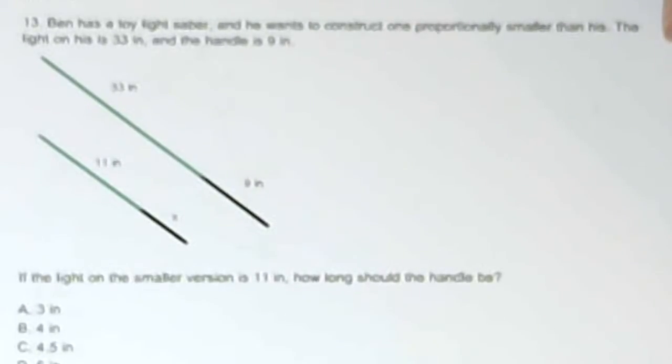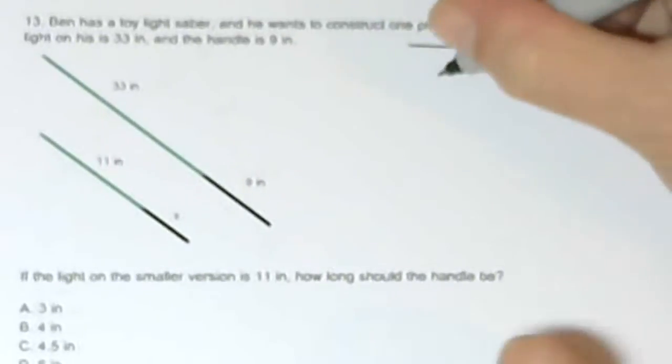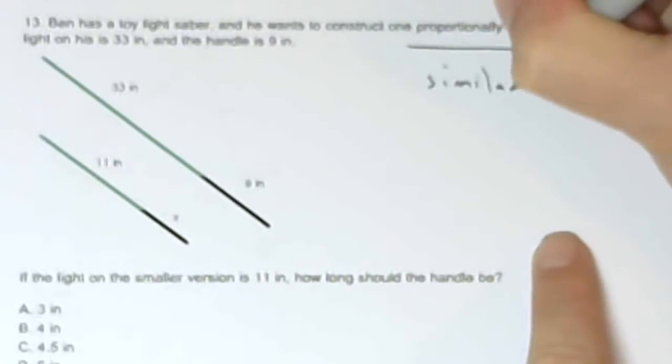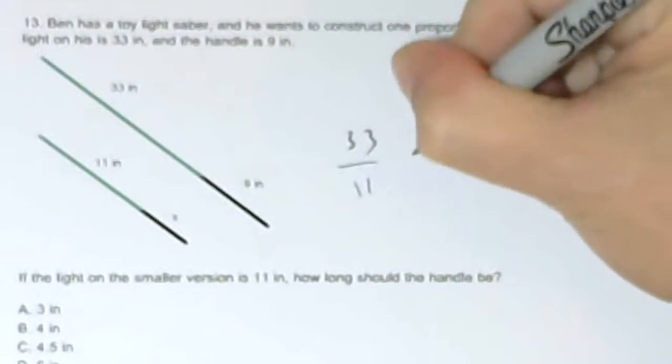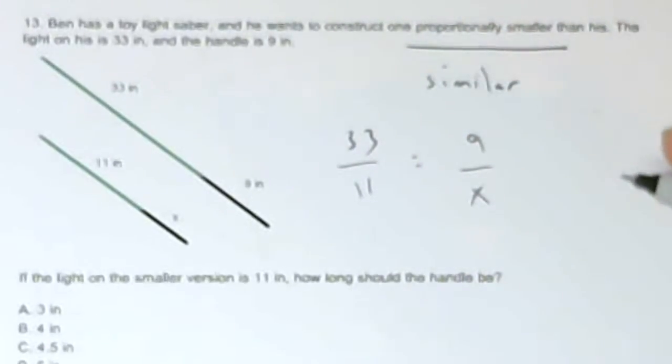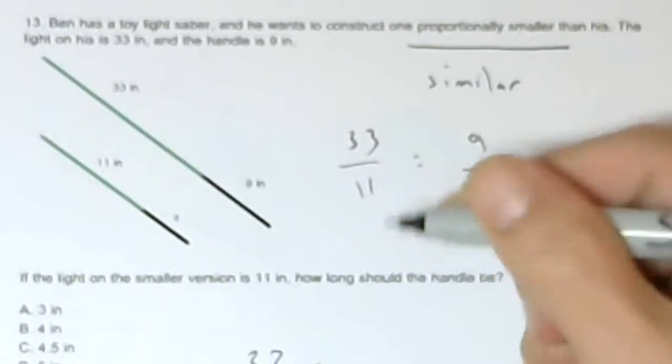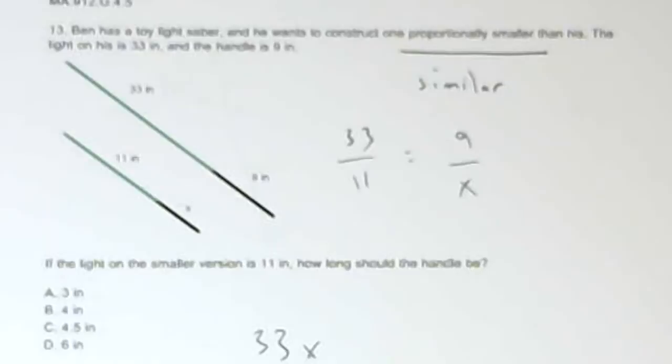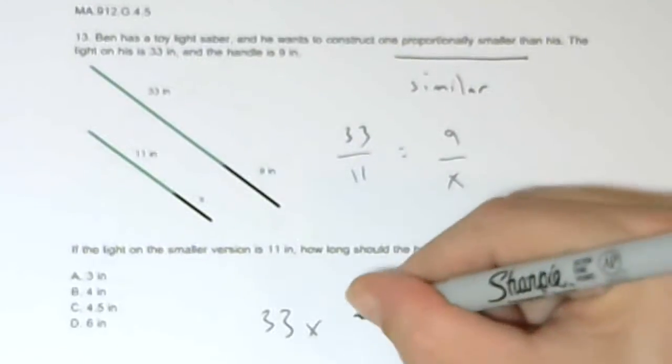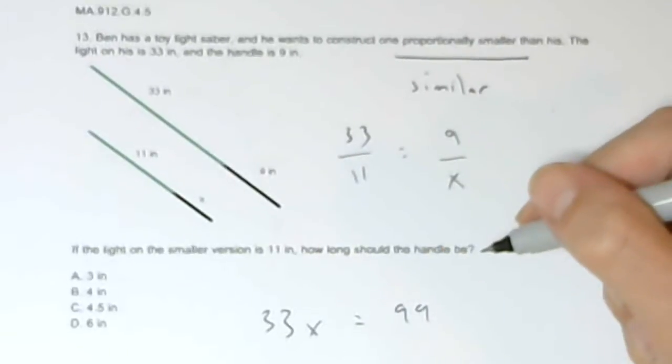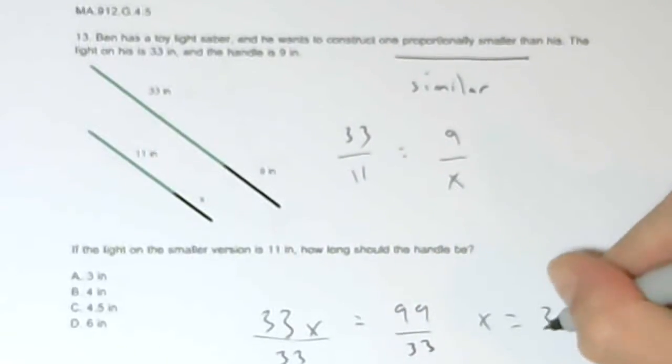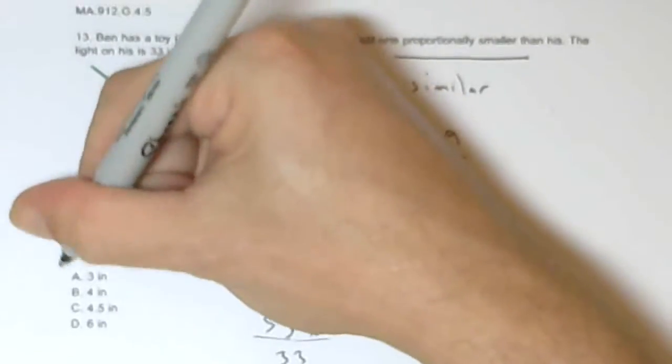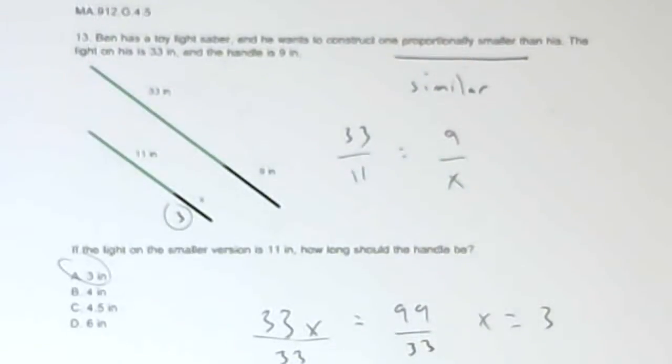Well, I'm going to set up another proportion because proportionally smaller means I have similar figures. It's basically asking the last question in reverse. So the large green over the small green, 33 over 11 equals 9 over X. 33X equals 99. Divide by 33, X should equal 3. So this portion is 3, answer choice A.